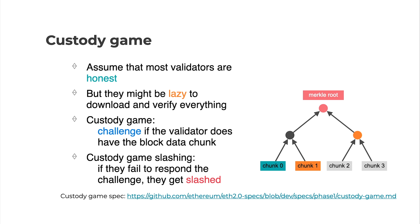The custody game addresses the case where validators are honest but might trust each other too much, so they don't fully download, store, and verify the shard blocks entirely. A challenger can send a challenge on-chain to verify if a validator holds a piece of the shard block data. Each piece of the shard block data is set as a chunk, and we use a binary Merkle tree to store the data. In this figure, each leaf is a chunk of the shard block body, allowing us to Merkle-ize the shard block body to a Merkle root.